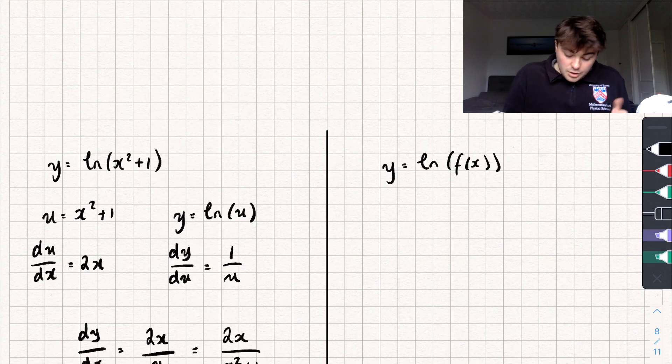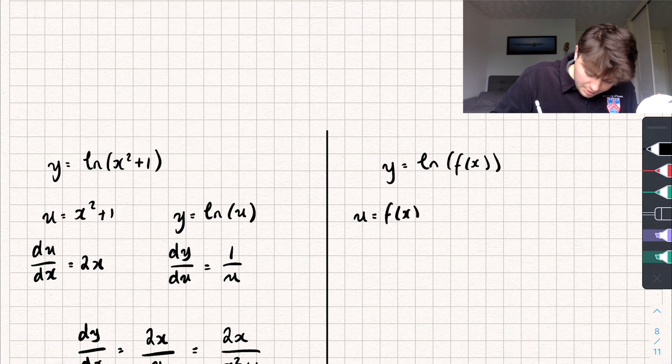And so we're going to use the chain rule again. So we're going to say u equals f of x. So then y is going to be equal to the natural log of u.